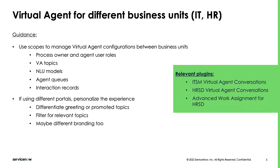NLU models likewise should be in their respective scopes — an IT NLU model, an HR NLU model. If you've got one single NLU model, that should probably be in global, but otherwise those models should be in their respective scopes. Agent queues should also be scoped. If you've got an IT queue for agent chat and an HR queue, those should be in their respective scopes as well. Finally, interaction records should also be scoped, so that if I'm not in an HR scope, I should not be reading HR conversations and vice versa.